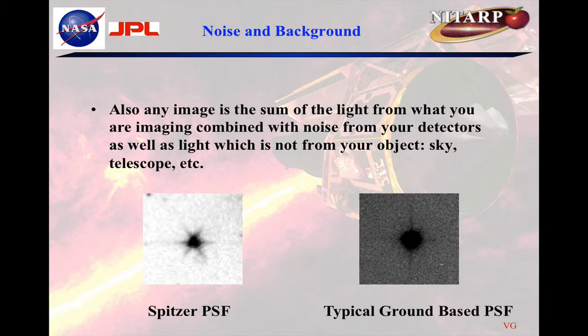Also, any image is the sum of the light from what you are imaging — in this case a star — and noise from your detectors, as well as light which is not from your object: background from the sky, or your telescope scattering some light. That's not what your source is, and you want to eliminate that.